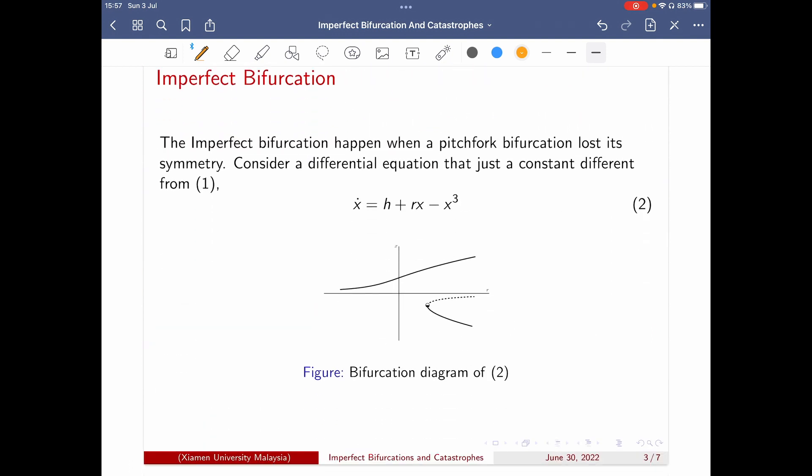Imperfect happens when the pitchfork bifurcation dot is asymmetric and considers differential equations like just now but just a term's difference, the h term difference. We call this a symmetry breaking term.